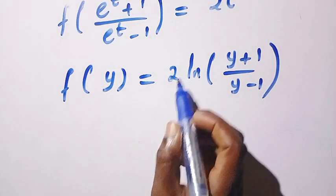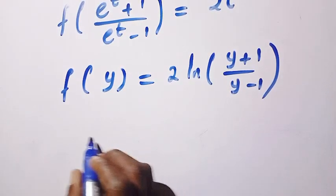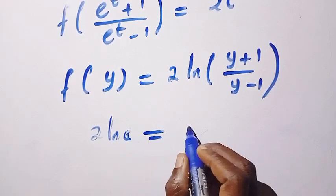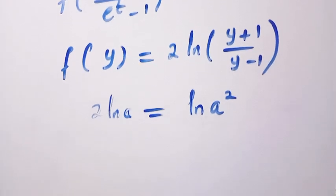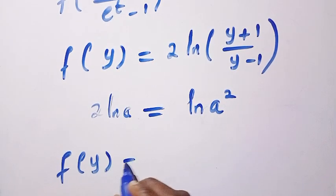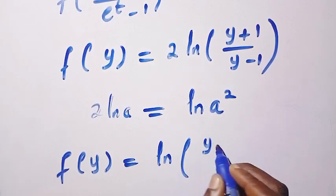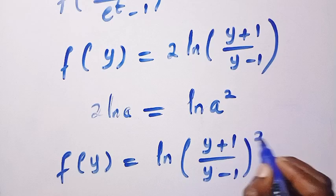We can also rewrite this by the rule of logarithm. Suppose we have 2ln(a), this is the same as ln(a^2). So by applying it here, we have f(y) = ln[((y + 1)/(y - 1))^2].